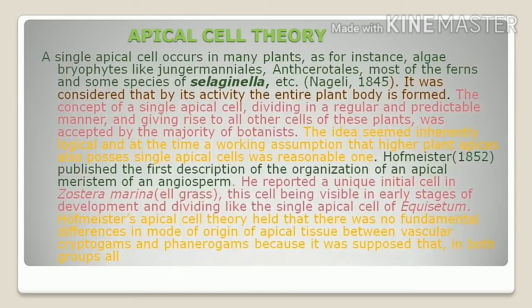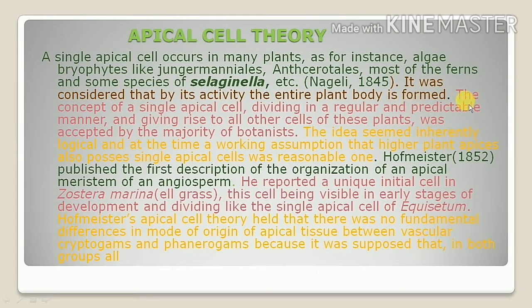There are many theories regarding the shoot apex. The first is the apical cell theory. A single apical cell occurs in many plants such as algae, bryophytes — including Jungermanniales and Anthocerotales — and pteridophytes, or in most ferns like Selaginella.